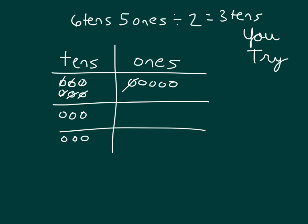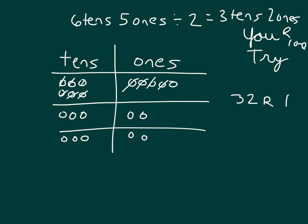Six tens divided by two gives you three tens. When we're dividing those five ones by two, there's a remainder in this case. So that's three tens, two ones, with the remainder of one. Our answer is three tens and two ones, which is thirty-two, and the remainder is one. Six tens, five ones divided by two is thirty-two remainder one.